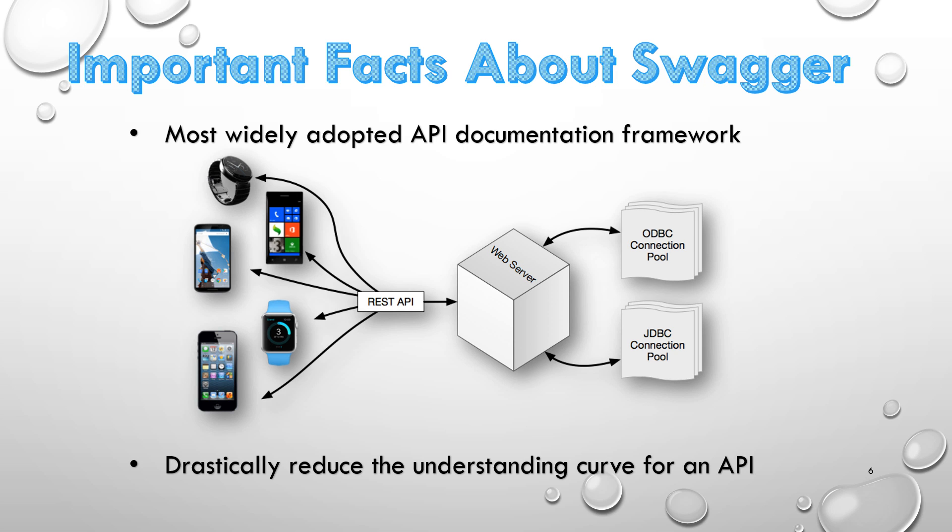There are a few important facts about Swagger. First, it is the most widely adopted API documentation framework, especially standardized for REST Web Services, meaning it is already used by many developers and has a huge community support. Another thing about Swagger is that it drastically reduces the understanding curve for an API with various automation features. You can keep in mind the example of more microservices — Swagger plays a crucial role for a person to understand your system as a whole.